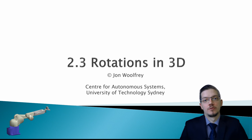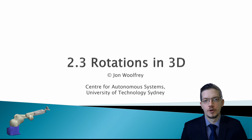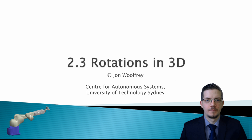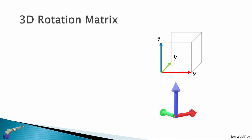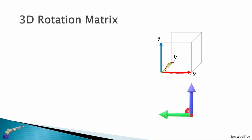Hello everyone. This lecture is on rotations in 3D. In lecture 2.2 we developed the rotation matrix in two dimensions, and now we're going to extend it to the third dimension. All the properties we derived for the special orthogonal group still apply here. We looked at a rotation matrix in the XY plane and now we're extending it with the third dimension in Z.